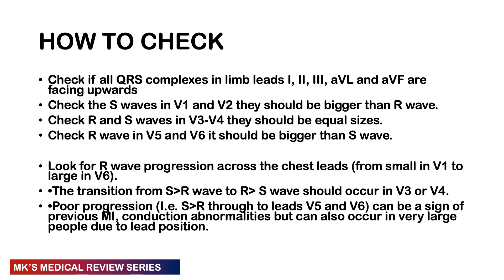The RS wave progression is best checked from the precordial leads. First, check the QRS complexes in the limb leads — they should be positive in leads I, II, III, AVL, and AVF. In AVR the QRS complex should be negative. Then check the predominant wave in V1 and V2: if the S wave is bigger than the R wave, it is predominantly negative — this is normal. In V3 and V4 they should be roughly equal in size. In V5 and V6 the R wave should be bigger than the S wave — predominantly positive. That is a normal RS wave progression.